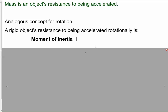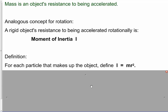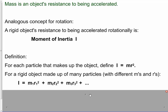Here's the definition. We think of each little part — each particle, even each atom — that makes up the object. The moment of inertia is m times r squared, where m is the mass of the particle and r is how far away that particular particle is from the axis of rotation. You do that for all the particles that make up the object and add them up. That gives you the overall total moment of inertia.